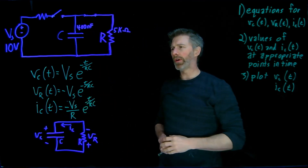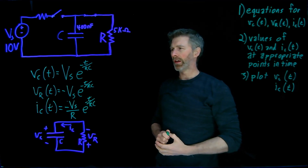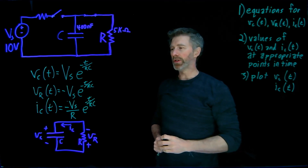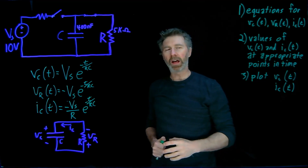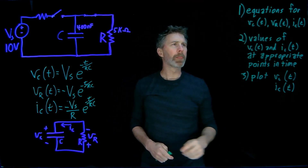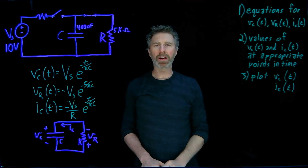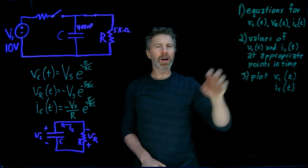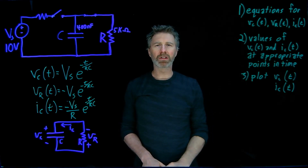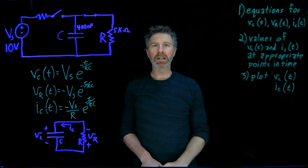These are the general equations that we've already derived for the capacitor voltage, the resistor voltage, and the current through the capacitor. These are the things we want to figure out: the exact equations for the capacitor voltage, resistor voltage, and current, as well as the values of the capacitor voltage and current at some appropriate points in time. Then we want to plot VC and IC.